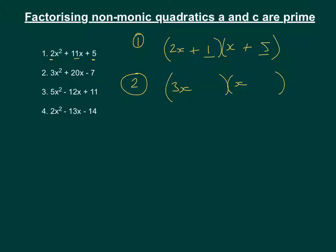Now, looking at this, it looks like we're going to have minus 1 and positive 7. The reason I thought that is because this is quite a big number, and the biggest number we could get would have been by doing 3 times 7. That would give us 21, and then take away 1, which gives us 20.